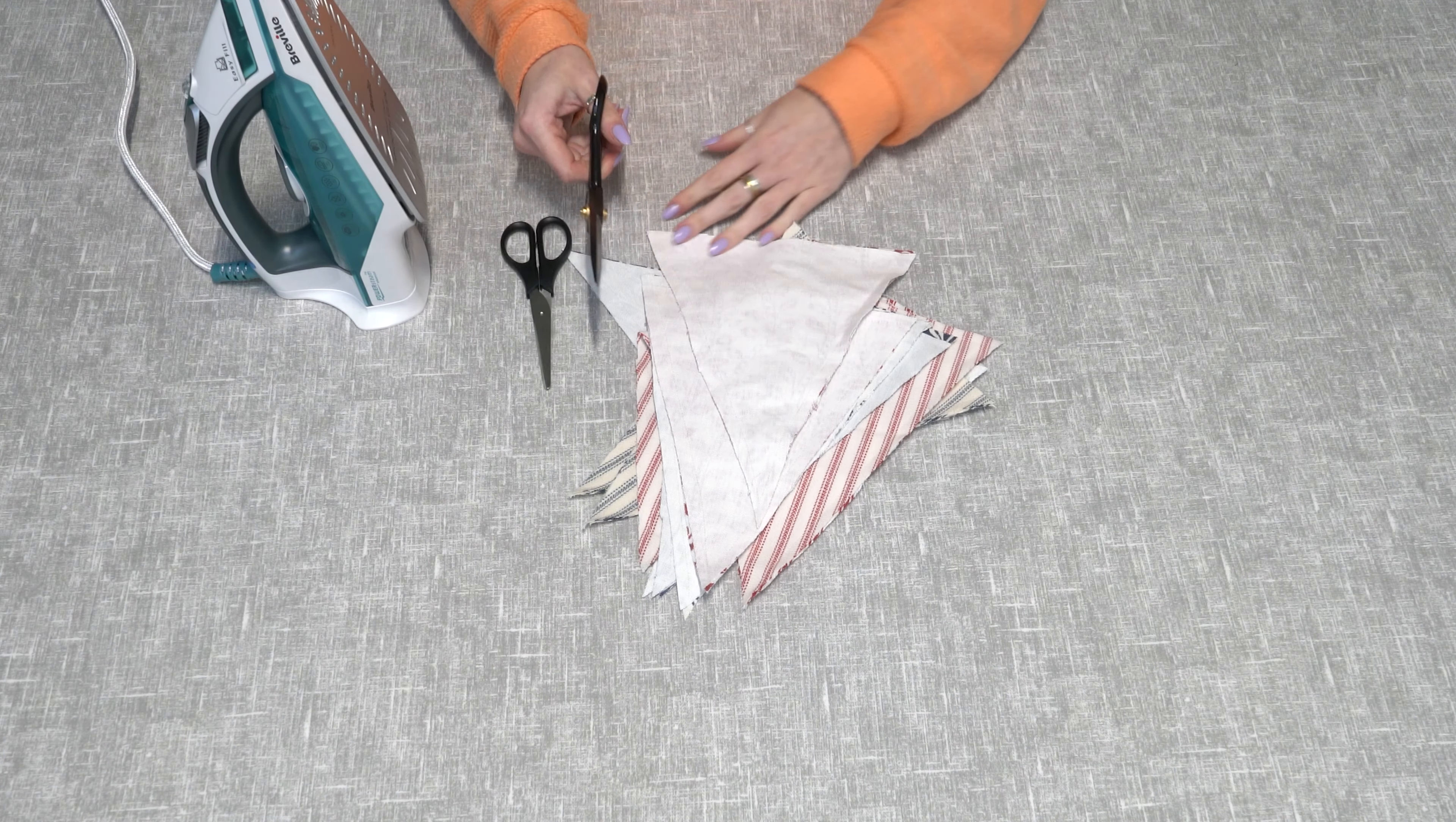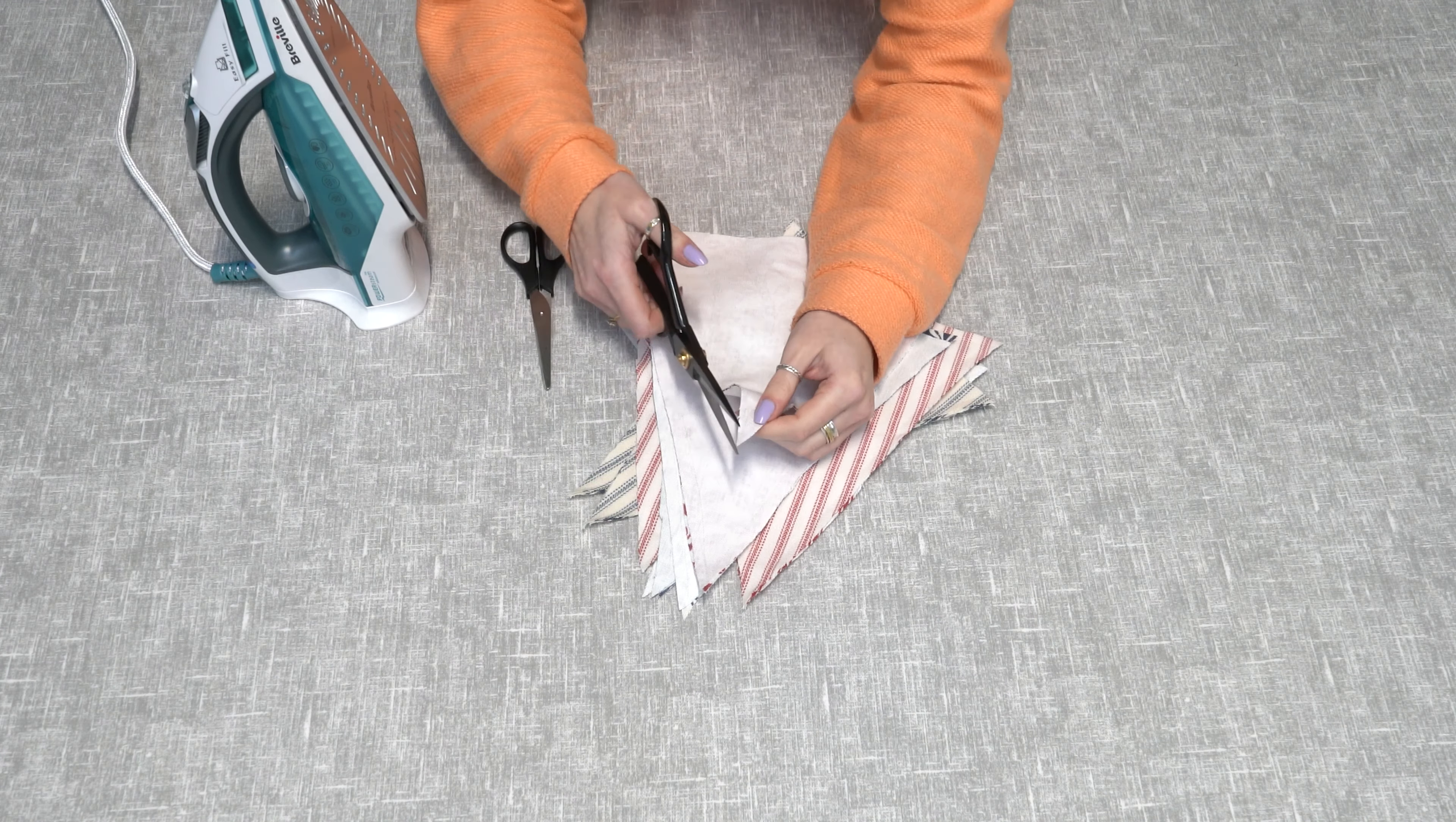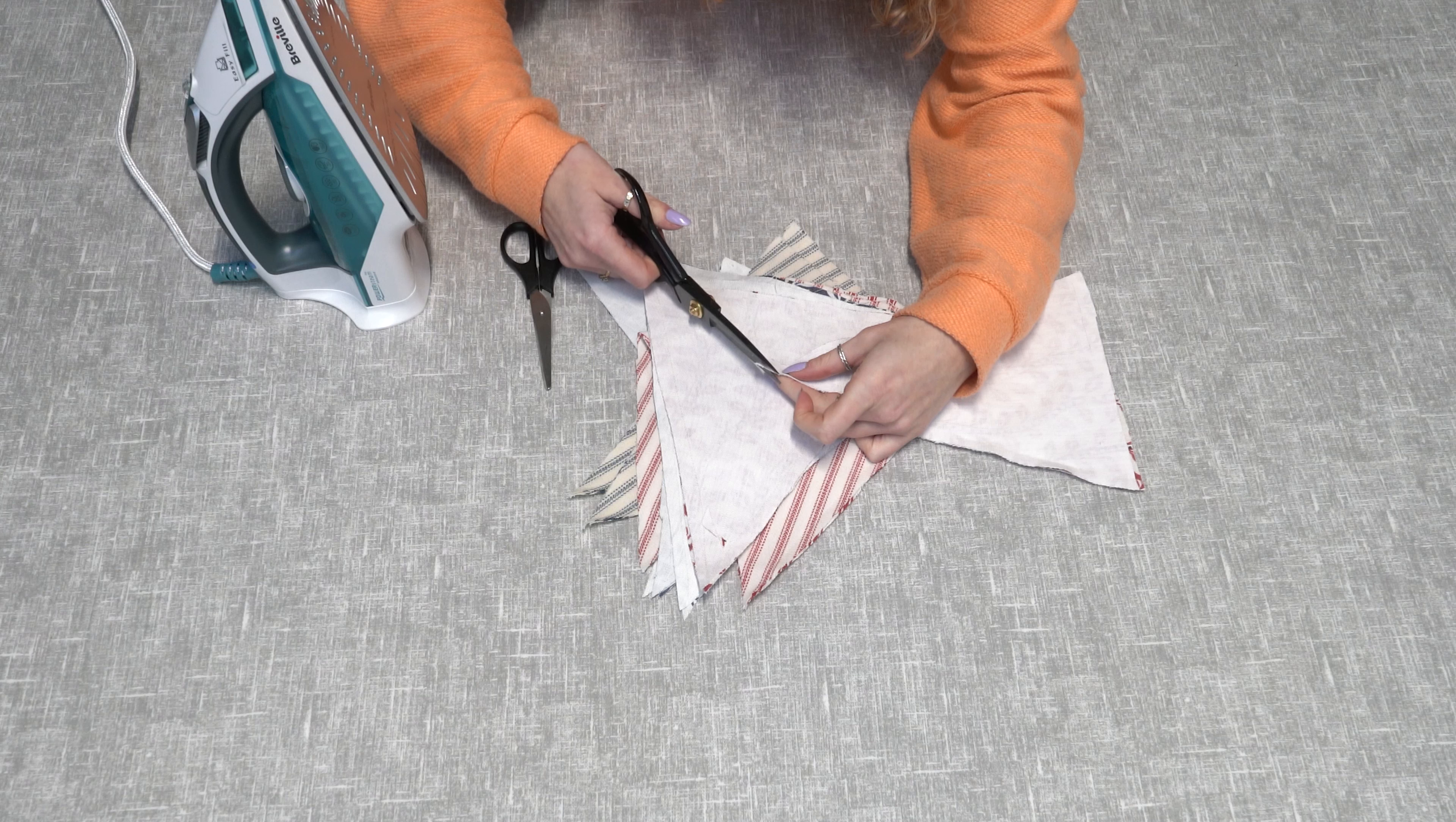So once you've stitched around all the edges, you're going to use your scissors to cut the end of each triangle on a diagonal so that they are easier to turn the right way out.